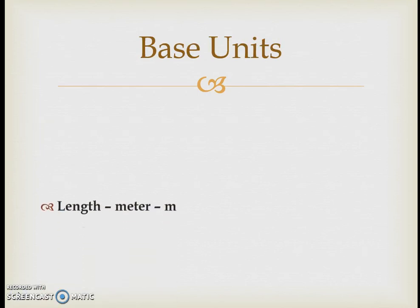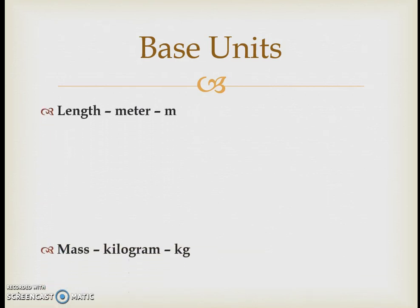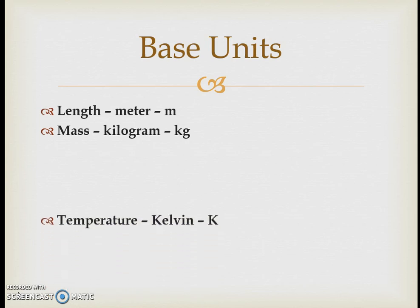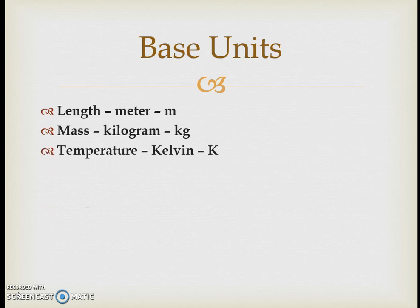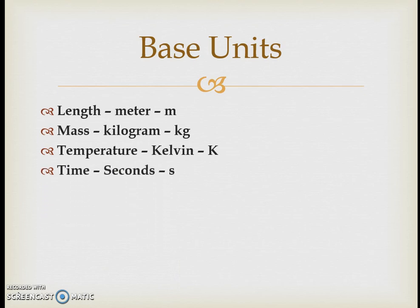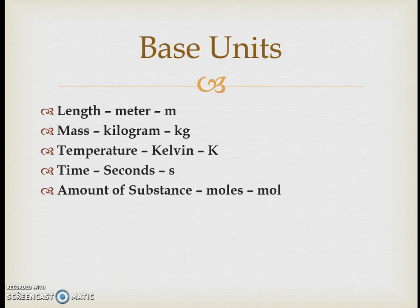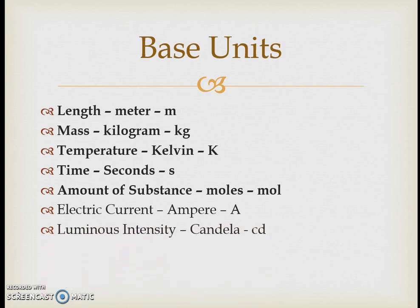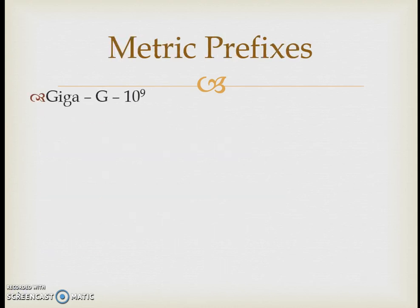The kilogram is the only base unit with a prefix already attached because grams alone are too small to be practical — one kilogram is about 2.2 pounds. For temperature it is kelvin — we don't use Fahrenheit in science, and converting from Celsius to Kelvin is straightforward. For time it's seconds (lowercase s), and for amount of substance it's moles. There are two additional SI units used in physics: the ampere for electrical current and the candela for light intensity.